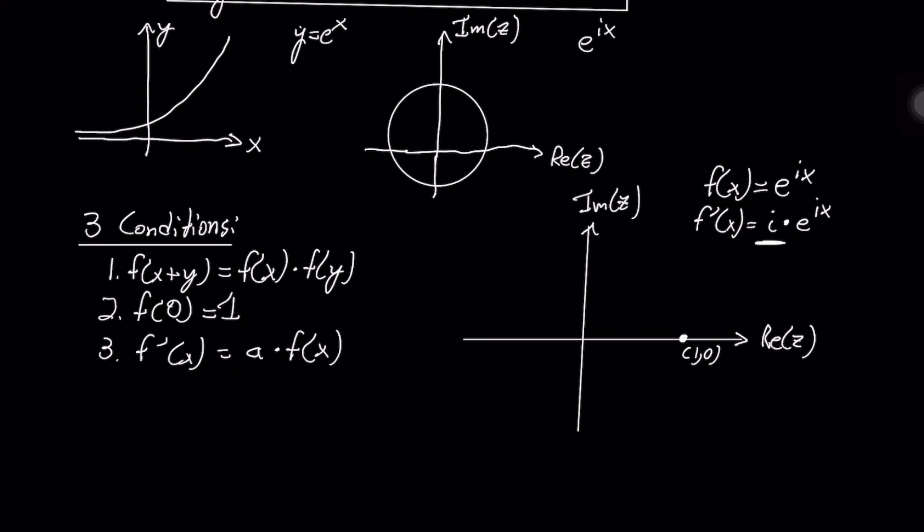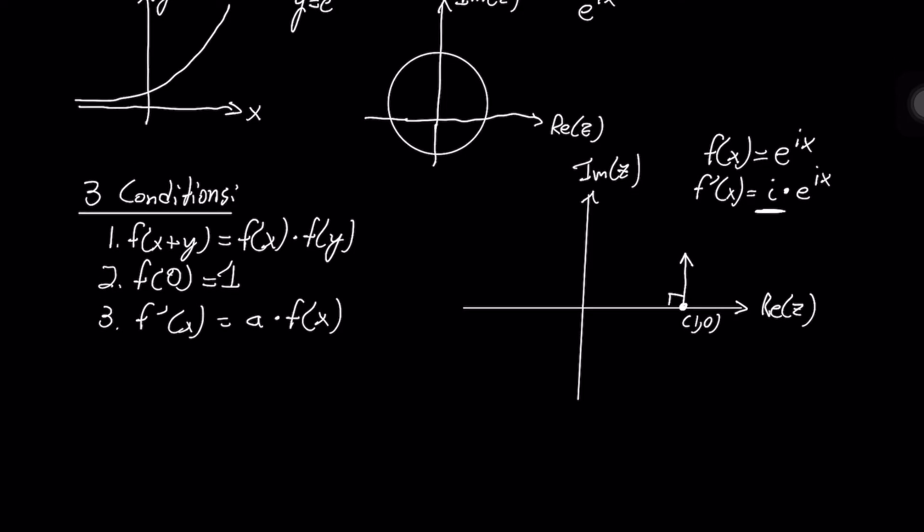So we know that i is pointing upwards in the complex plane. So we know that the rate of change of the function is pointing straight up right now, and we know that it is perpendicular to the real plane right now.